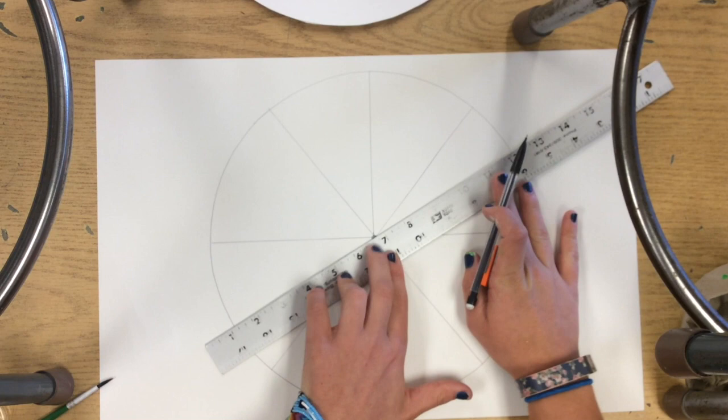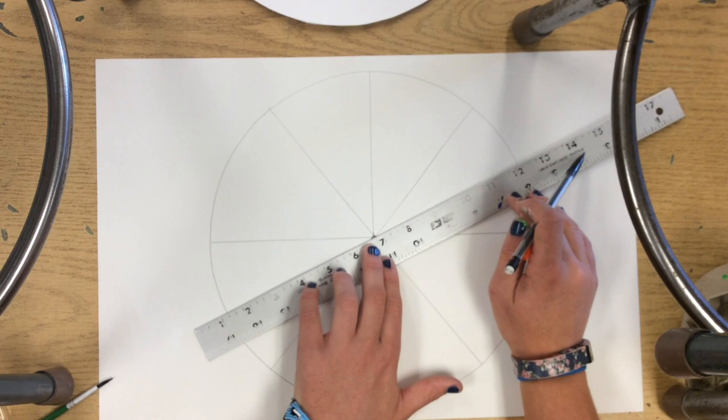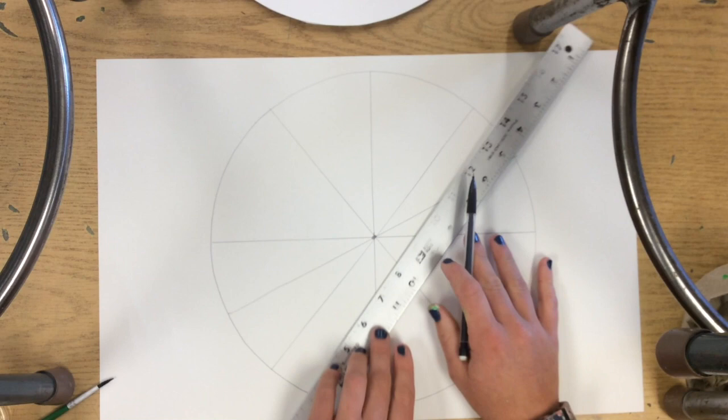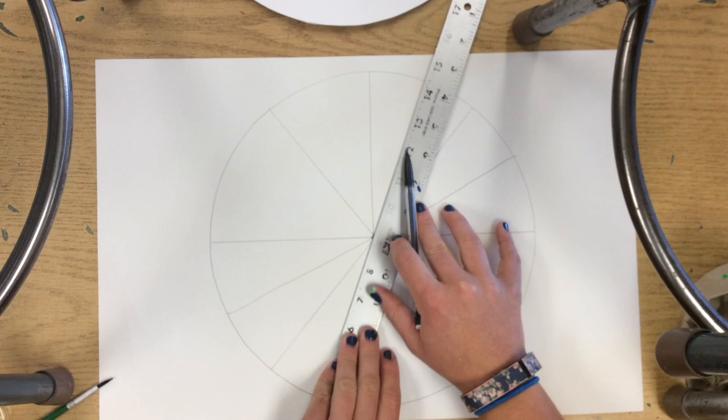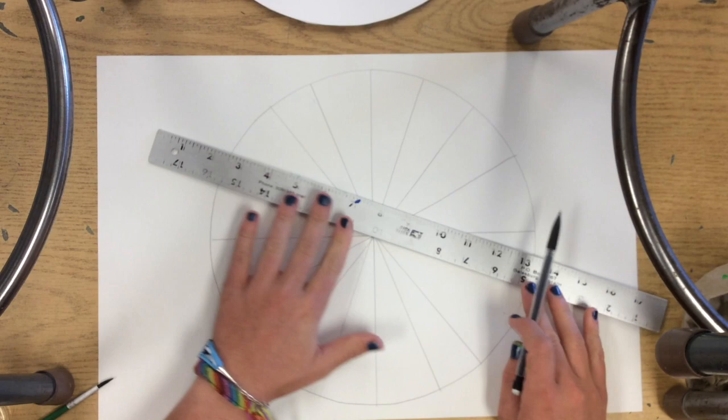Now I'm going in and splitting my pie pieces in half again, so I have four on the top and four on the bottom. I'm going to double that once again, keeping that ruler in the center of the circle. I'm just going to continue and go around to complete that.